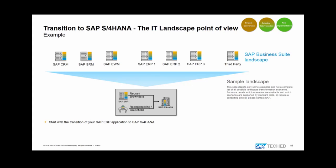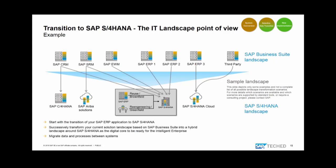S/4HANA is not only the successor to the ERP system — it's the digital core. Much of the functionality from warehousing, transportation management, supply chain management, major parts of SRM, and parts of CRM service management is now included in the digital core. When you have such a landscape, you start with transitioning your ERP to S/4HANA, but you also need to consider the future of your system landscape and likely need to transform your current Business Suite landscape into a hybrid landscape centered on S/4HANA.